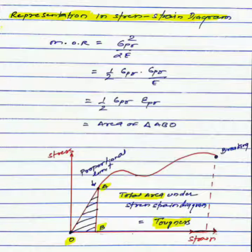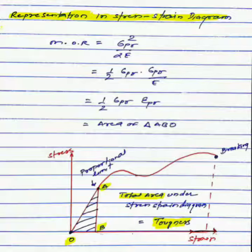For the representation of resilience in a stress-strain diagram, we will again consider the equation of modulus of resilience, that is σ_PL²/2E. By rearranging the terms, we can write 1/2 σ_PL (proportional limit stress).